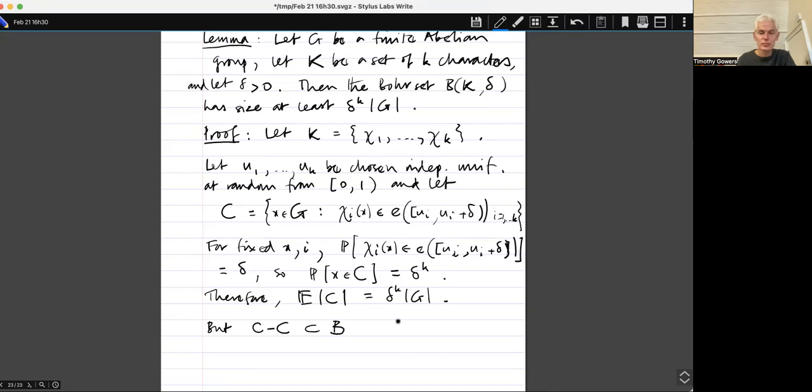So I'm going to write that C minus C is a subset of B. From which it follows that, oh, so perhaps I should say, first of all, pick C such, or pick U 1 up to U K, so such that the size of C really is at least delta to the K times the size of G. And then what I was saying before.